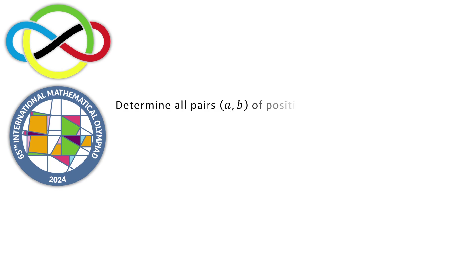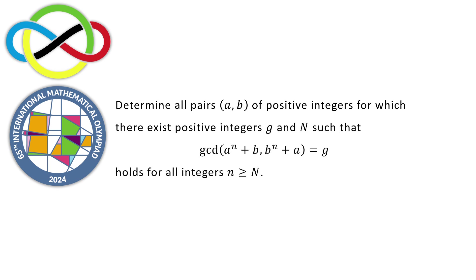Determine all pairs (a, b) of positive integers for which there exist positive integers g and N such that the greatest common divisor of the two expressions a to the n plus b and b to the n plus a holds for all integers. This is problem 2 from the 2024 International Mathematical Olympiad.